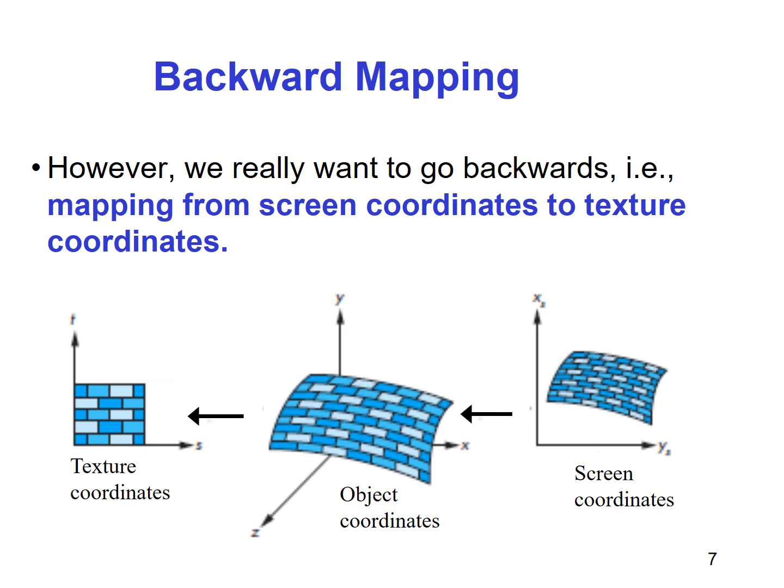We want to go backwards, that is, mapping from the screen coordinates to the texture coordinates. Given a point on the screen coordinates, we want to find out where it maps to on the 3D surface of the object, and then go all the way back to the texture coordinates to see what texture value it should get from the texture map.